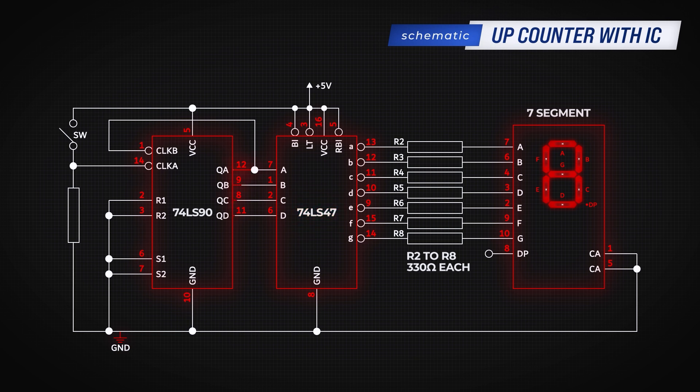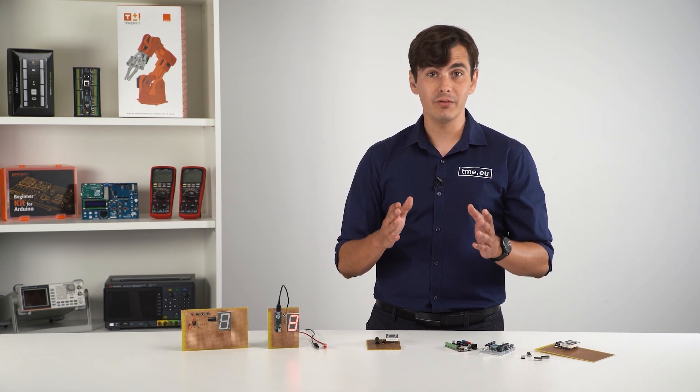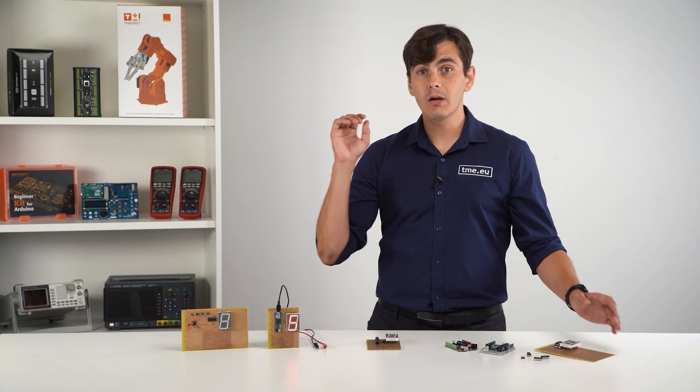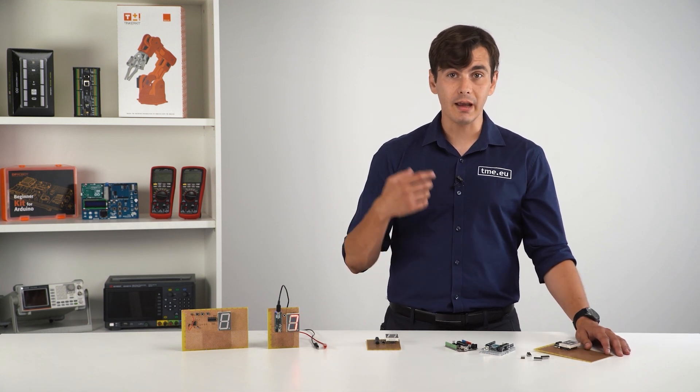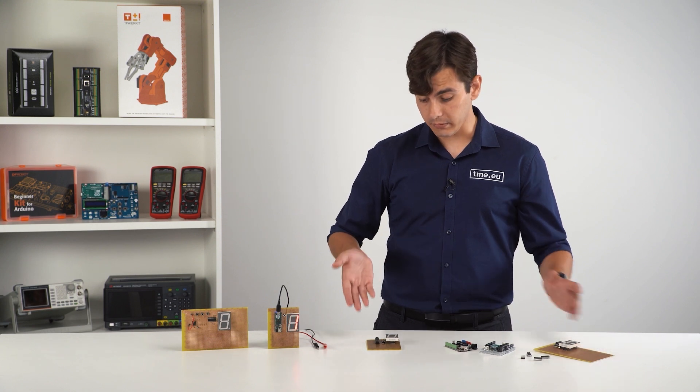Now, 74 LS47 display driver receives that signal and converts it to a decimal number. Using its seven output pins, the driver controls segments so that a newly converted decimal number will appear on the display. Building this circuit takes time, effort and most importantly, concentration. As one mistake can heavily impact on your design and on the functions.